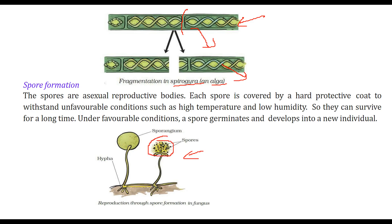In spore formation, spores are asexual reproductive bodies. Each spore is covered by a hard protective coat because of unfavorable conditions like high temperature and low humidity. Due to this protective coat they can survive for a long time, and when conditions become favorable the spore germinates and develops into a new individual.